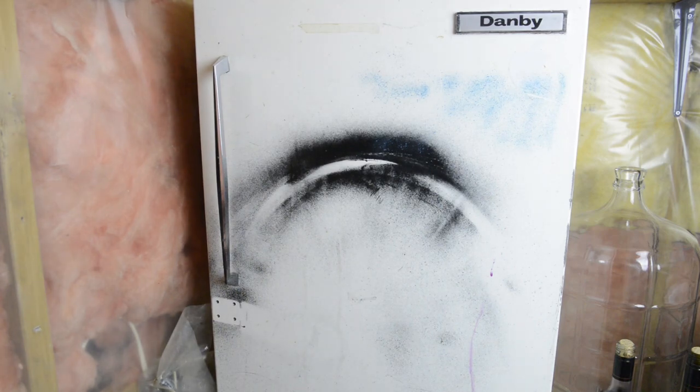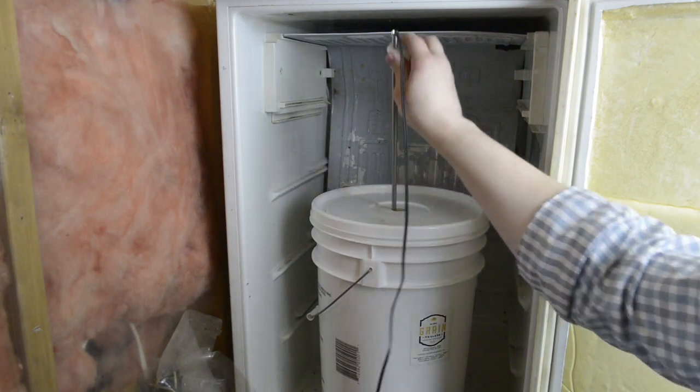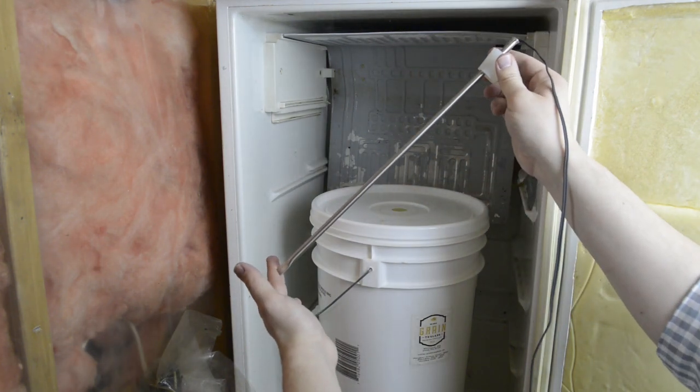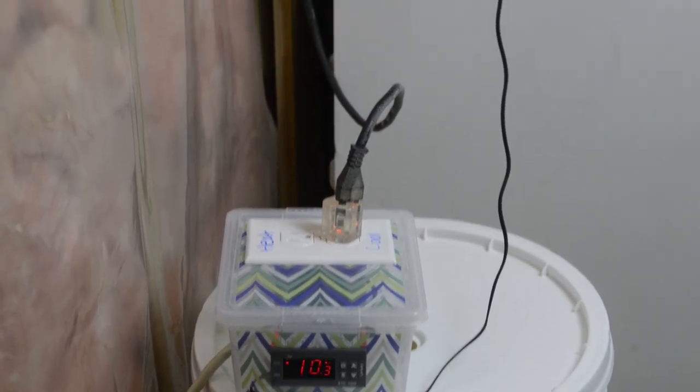So just make sure to use a thermal well in your beer or wine because that's how you're going to get a really accurate temperature. You want to measure inside the vessel and not outside of the vessel. And there you go. That's all there is to it. Please like my video and leave some comments.